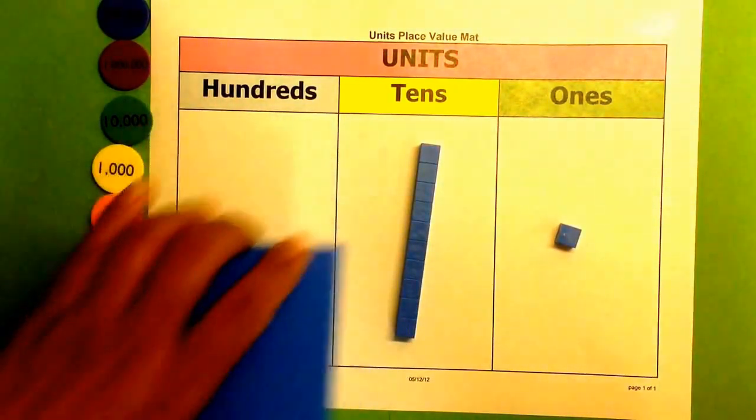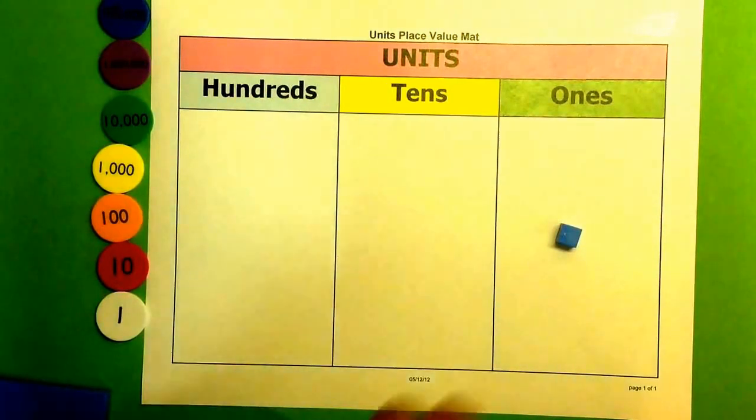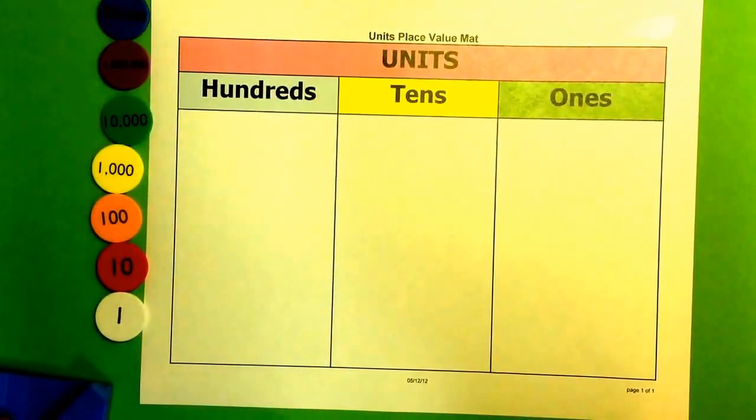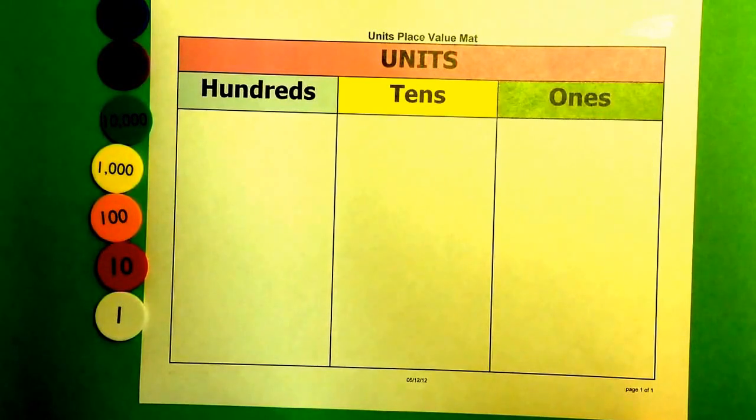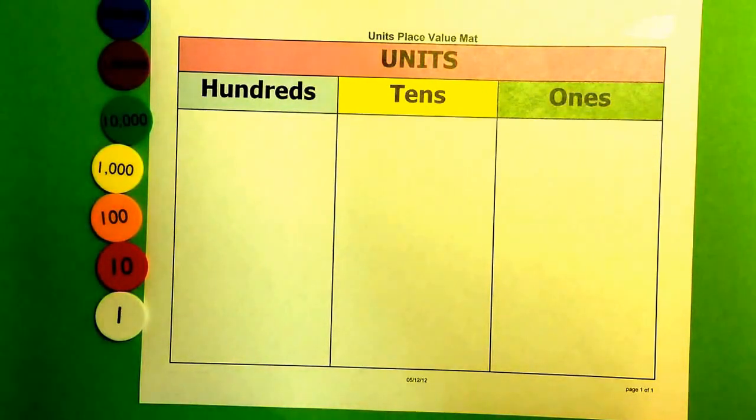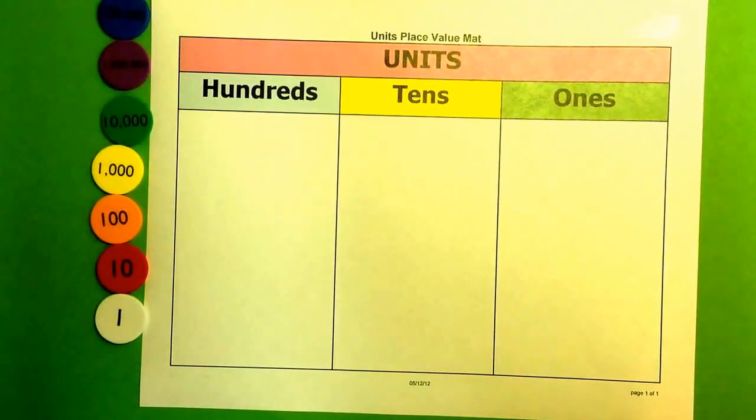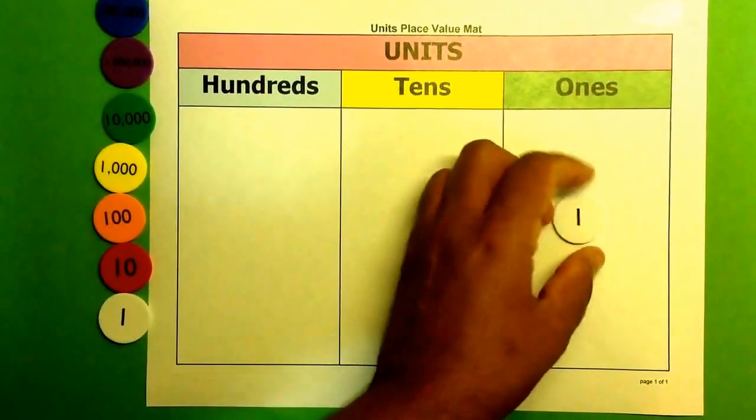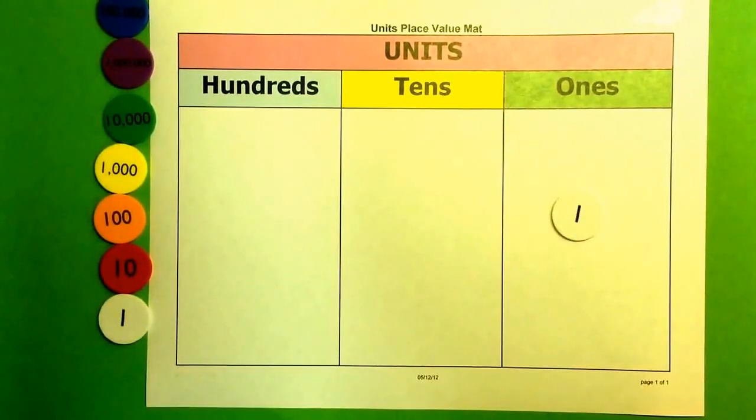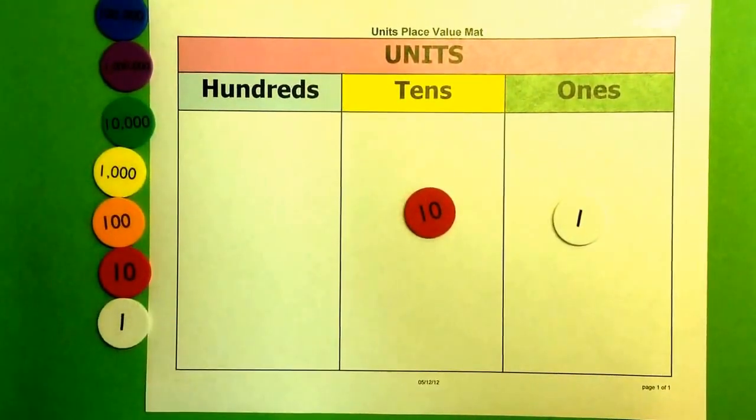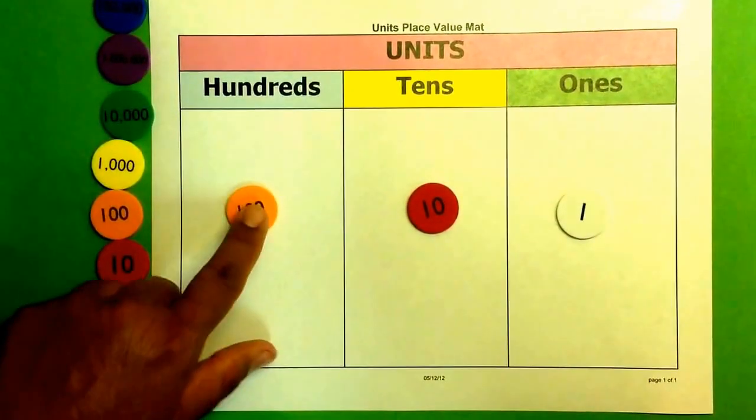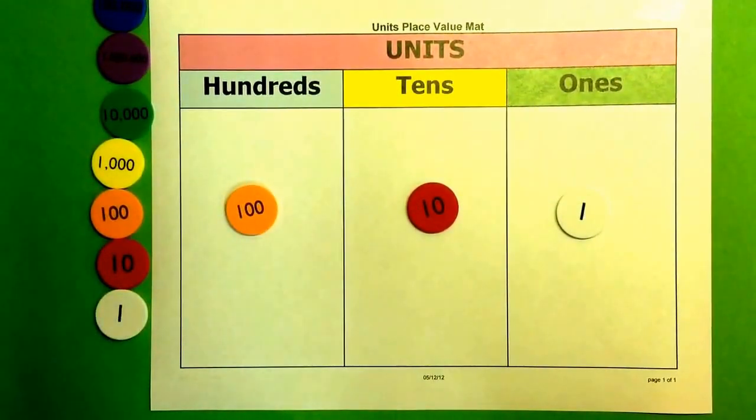When we're looking at place value disks, we say that they have a non-proportional relationship because of the size of each of the place value disks. So if we have a 1, we have a 10, and we have a 100 place value disk, you can see that they're all the same size.